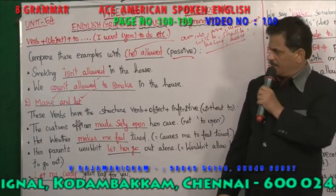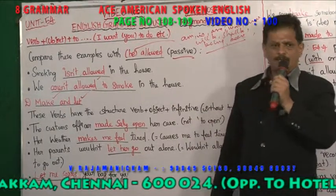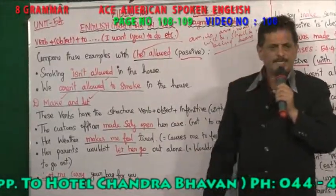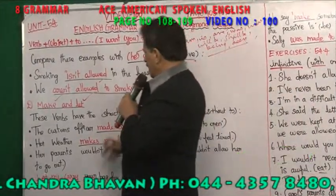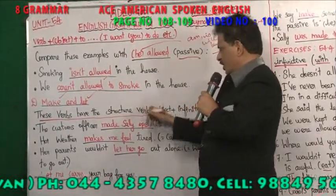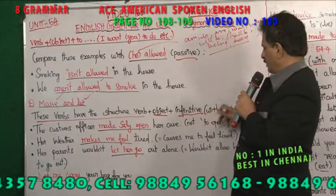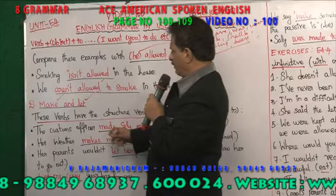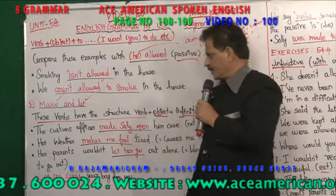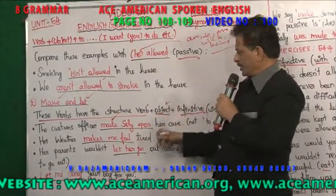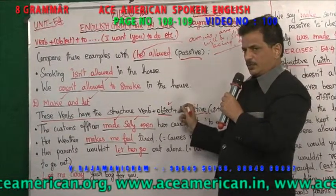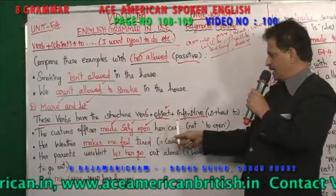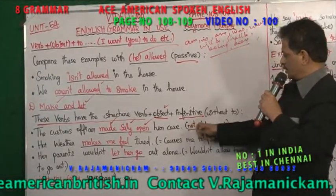What do you mean by 'make'? Make means you are making somebody do something. These verbs have the structure: verb plus object plus infinitive without 'to'. You are not supposed to use 'to'. See — the customs officer is the subject, 'made' is the verb, 'Sally' is the object, and 'open' is the infinitive without 'to'.